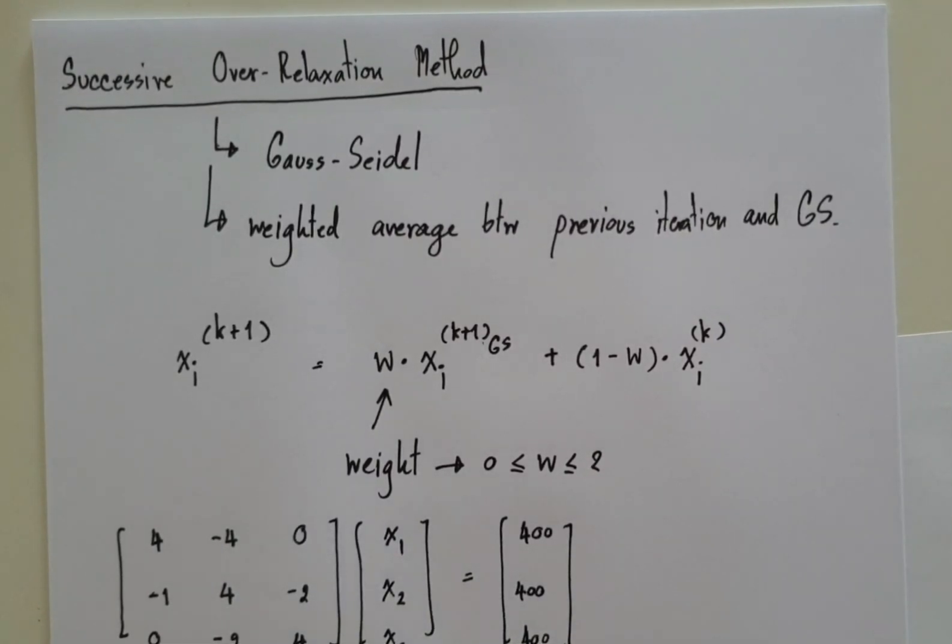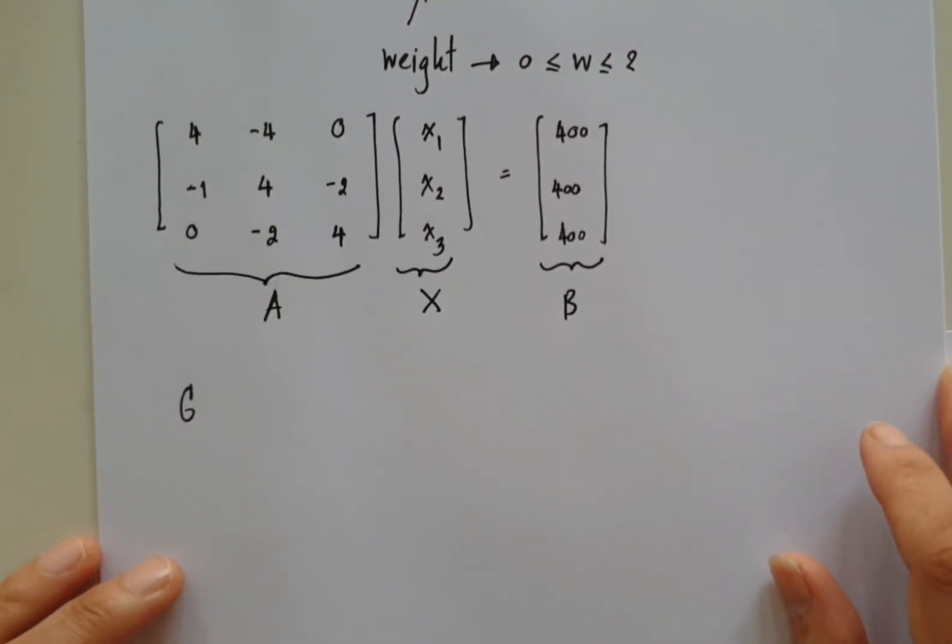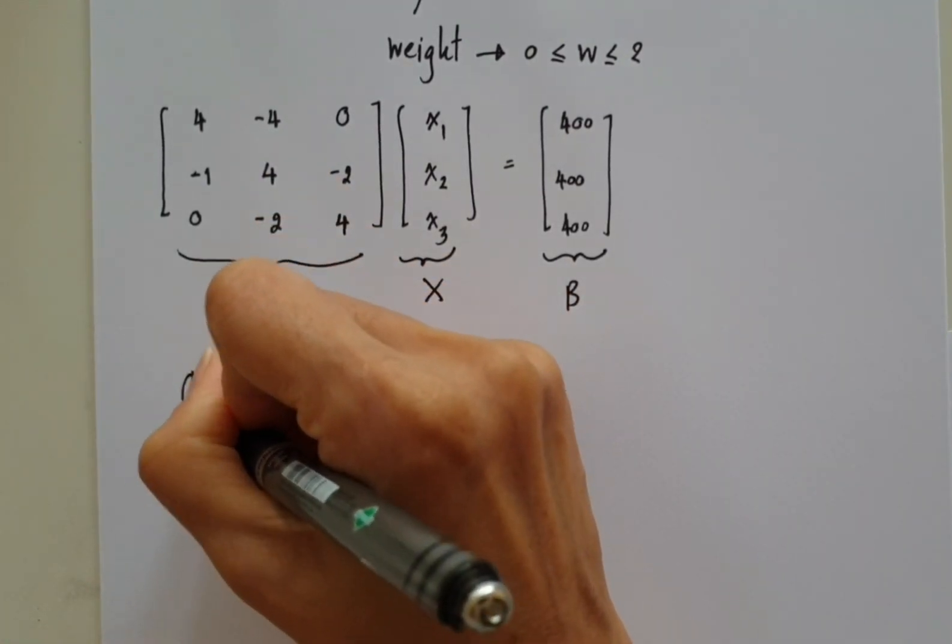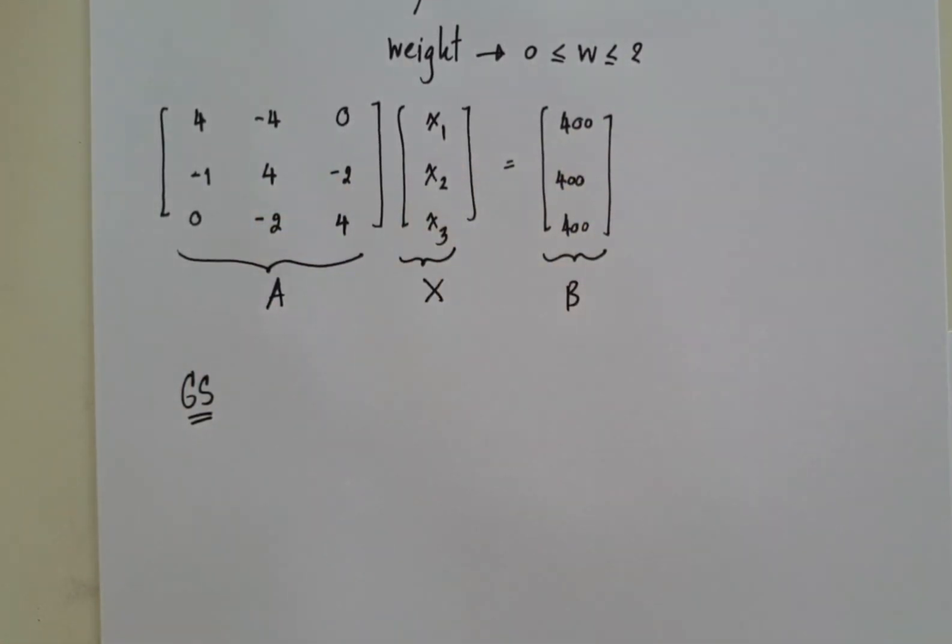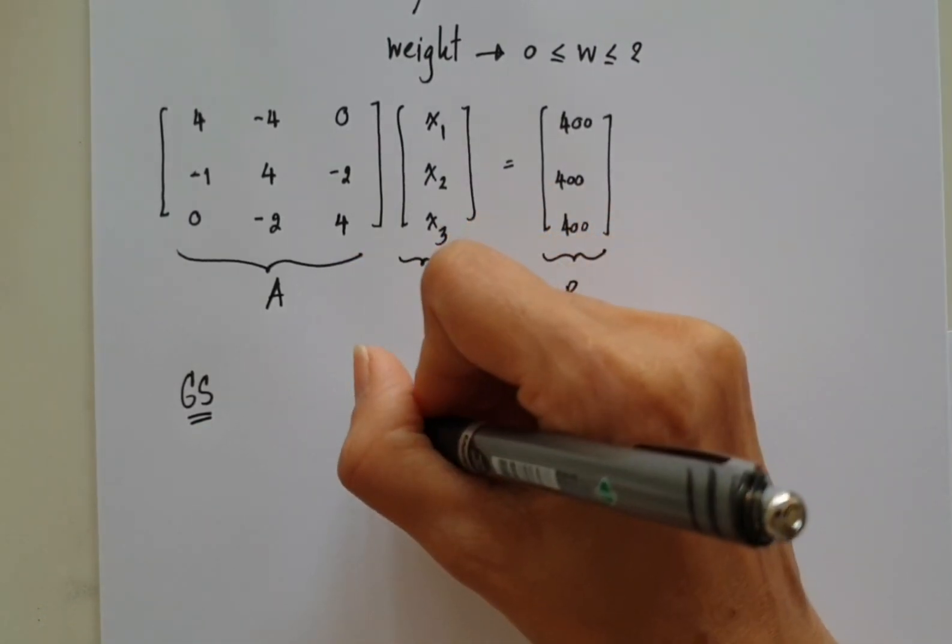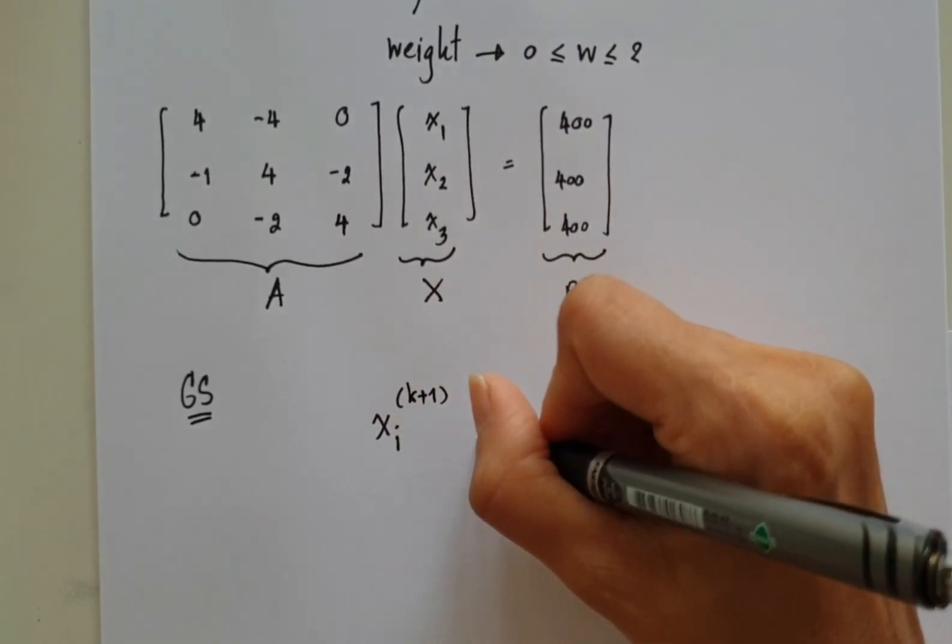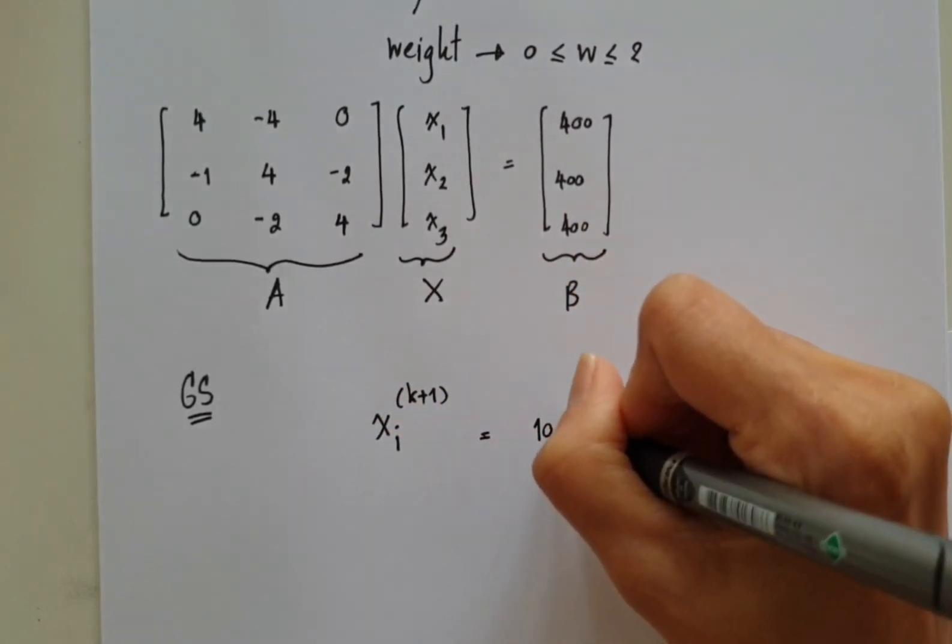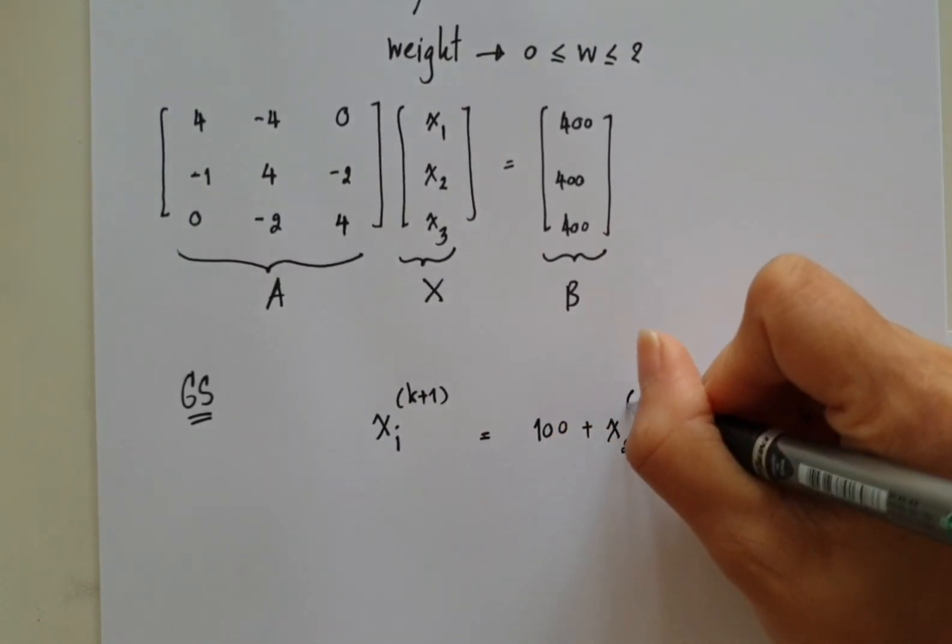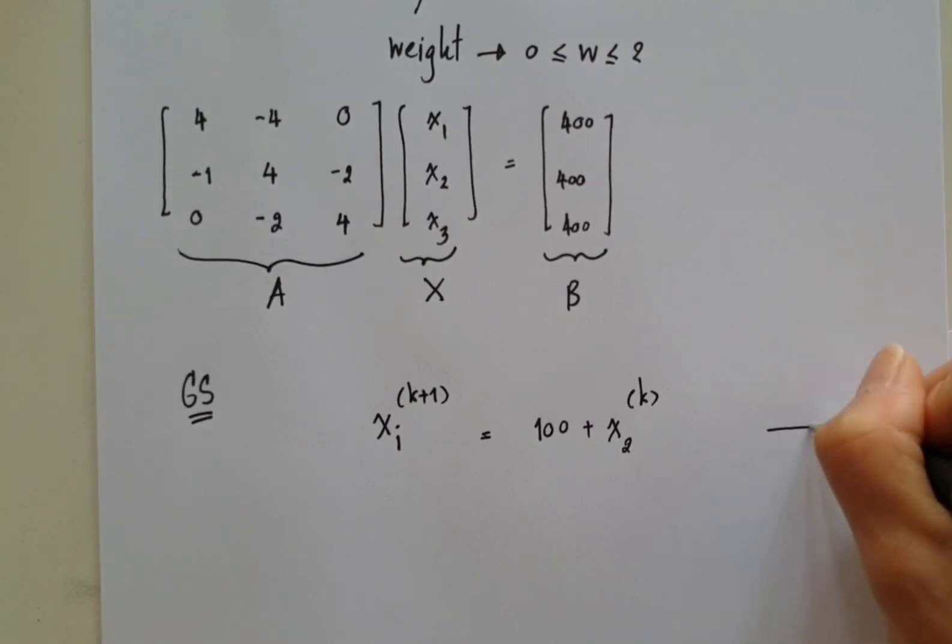From this equation A times x equals b, you already studied in the previous lecture that Gauss-Seidel updating equation would be x_1 at k+1 iteration would equal to 100 plus x_2 k over 4. This is equation 1.